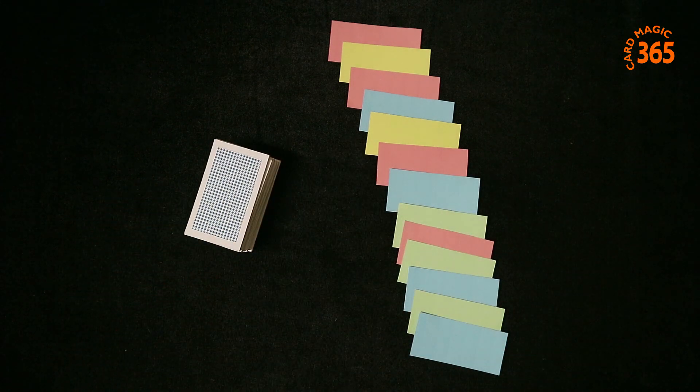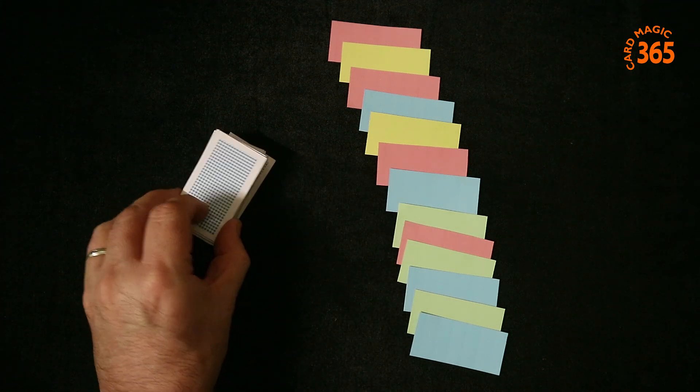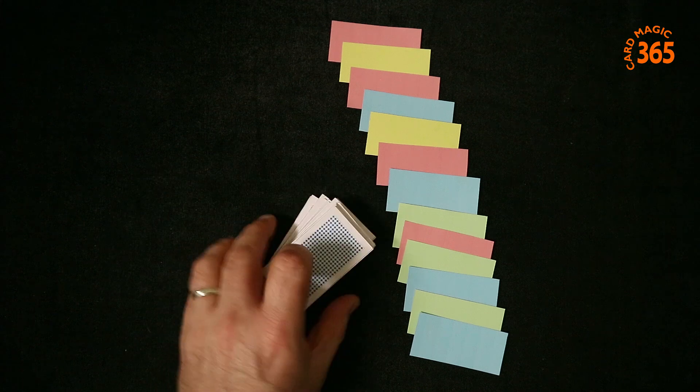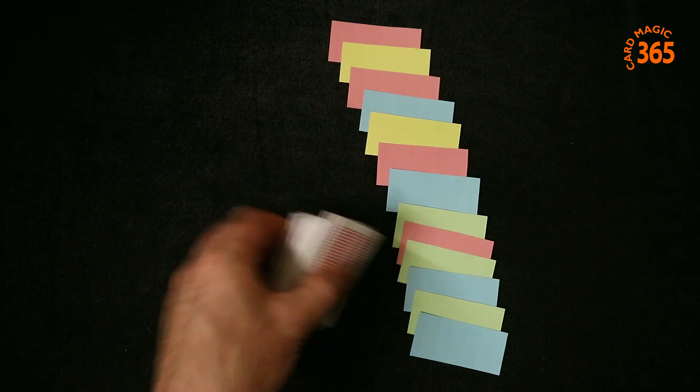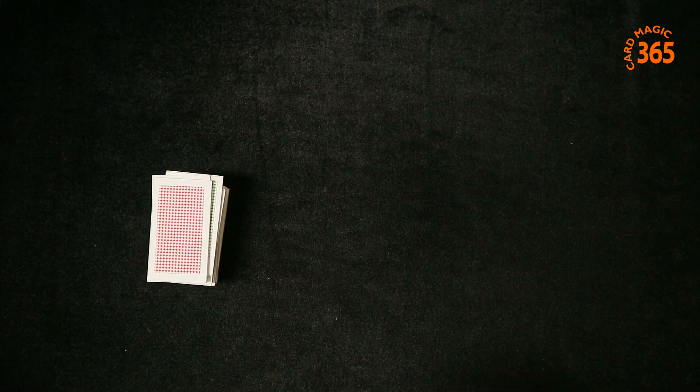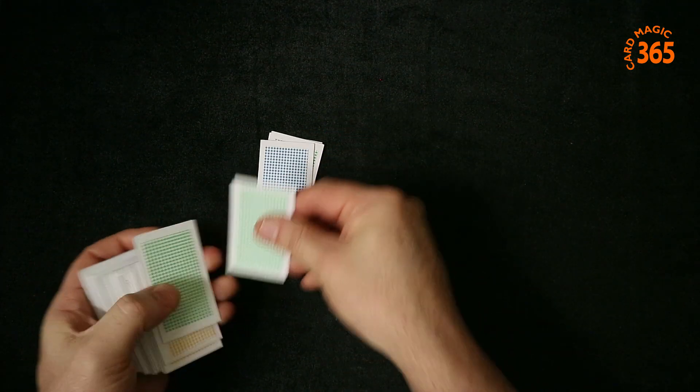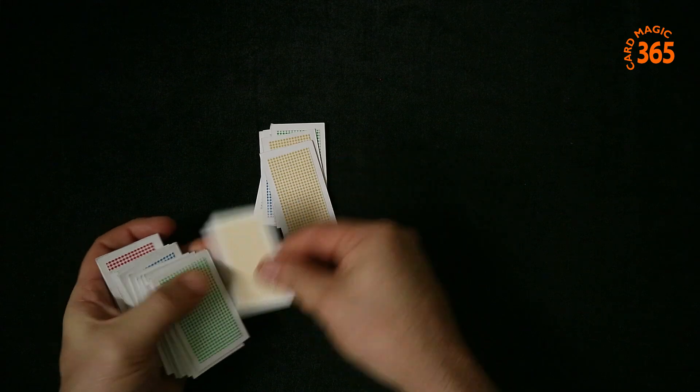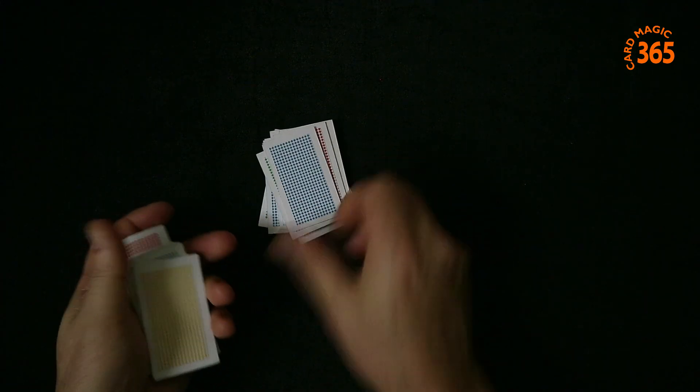Stack them together. Remember as most magicians will know that when you cut cards you don't disturb the sequence. So you can cut the cards. Get the spectator to cut them. You then get them to deal out the 13 cards. So they deal out the 13: one, two, three, four, five, six, seven, eight, nine, ten, eleven, twelve, thirteen.